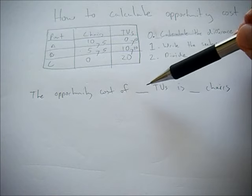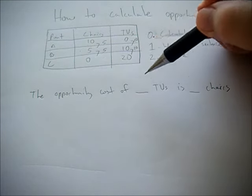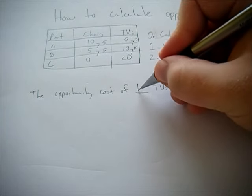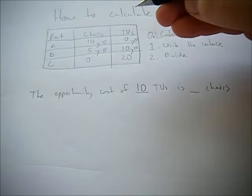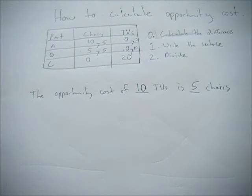Now you fill in these values with what the difference is. The opportunity cost of 10 TVs is blank chairs, so we have to give up 5 chairs. Now we have our sentence.